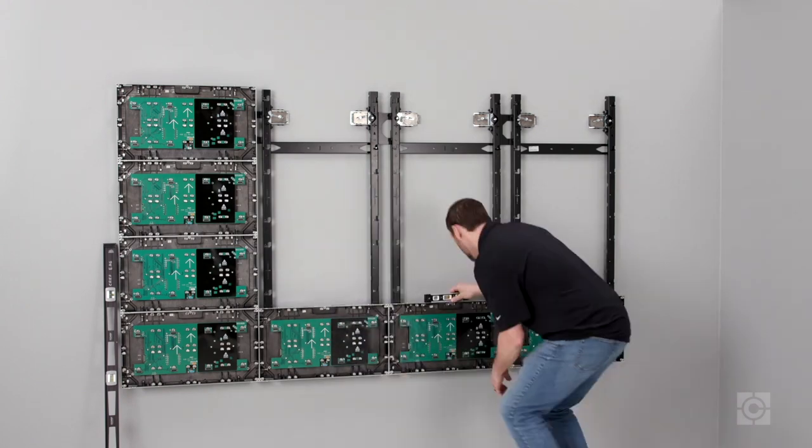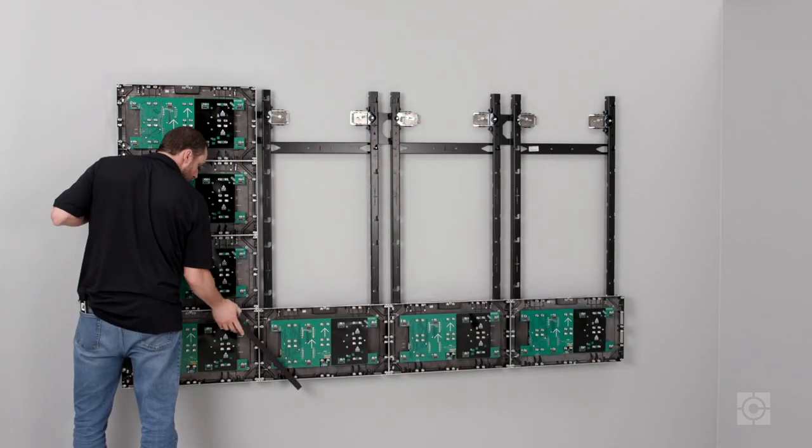Once the row is installed, re-check the plumb and level before filling out the video wall matrix.